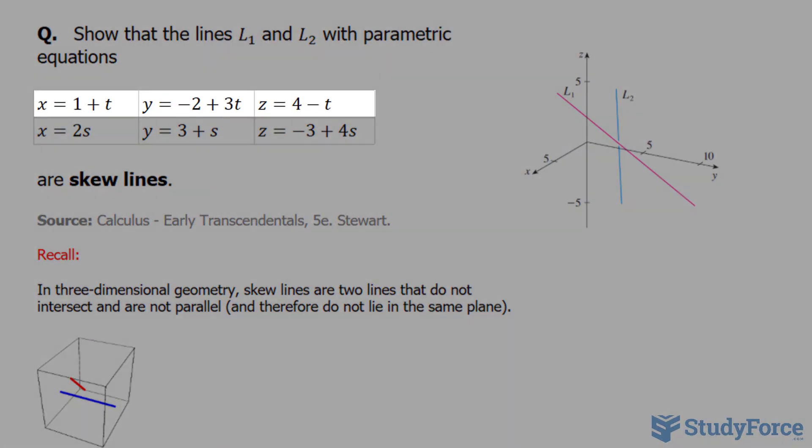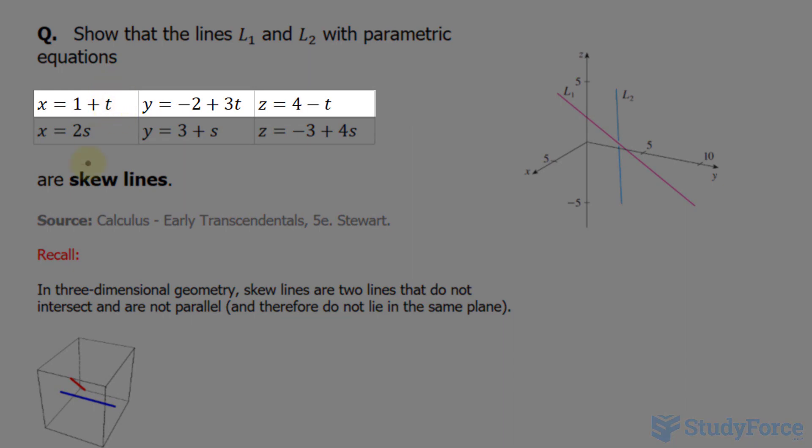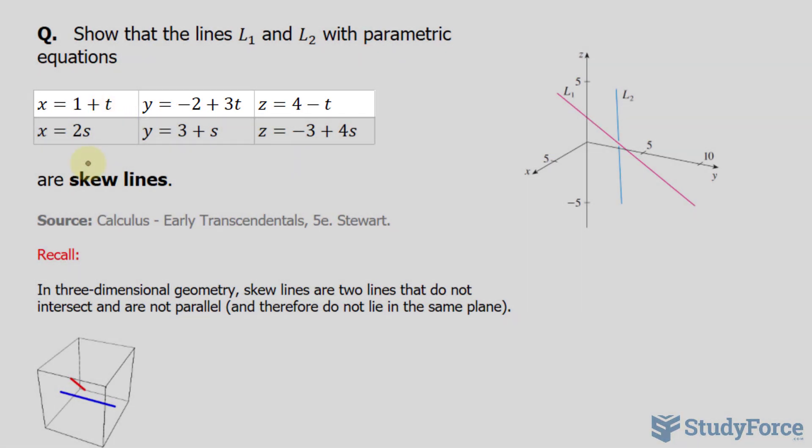The coefficient that is being multiplied to t represents the x, y, and z components. So the direction vector here, I'll call it v1, has the x component of 1, a y component of 3, and a z component of negative 1.